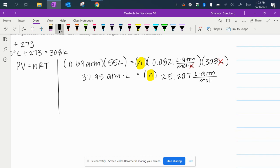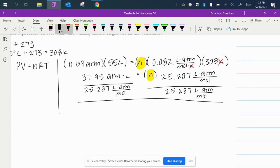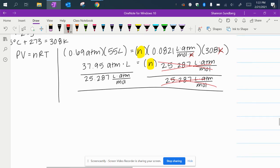I want to get that n value by itself. So I have to divide each side by 25.287 in all the units. So 25.287 liters times atmospheres over moles. Anytime you divide something by itself it cancels. So this is cancelled. And then on the other side here we're going to lose some units. We're losing liters and atmospheres. And we're left with moles. And that makes sense because that is what you are solving for. So when you take 37.95 divided by 25.287 you're going to get 1.501 moles. And that's equal to your n value.